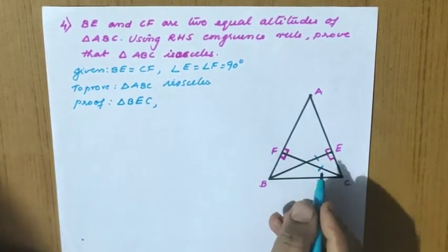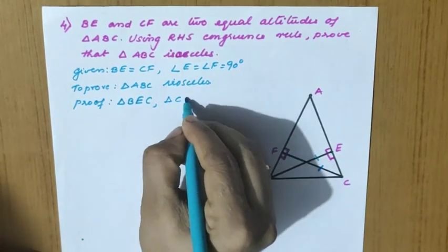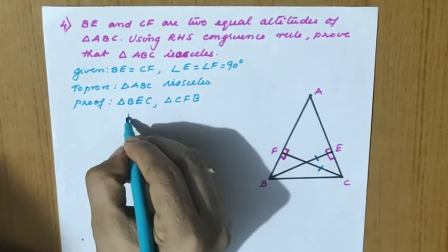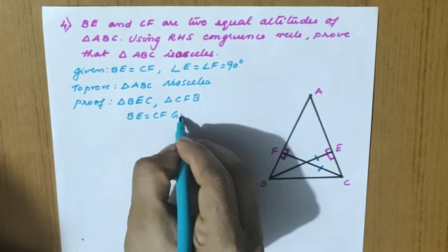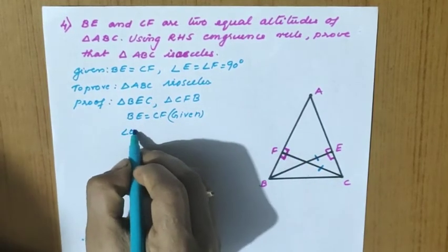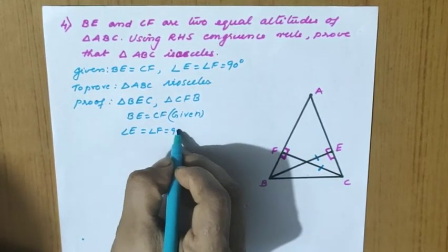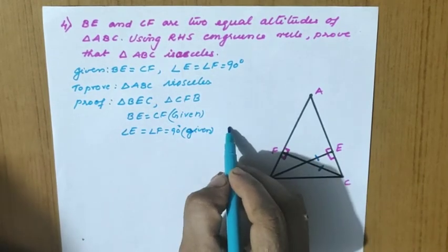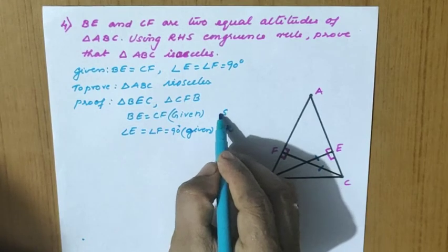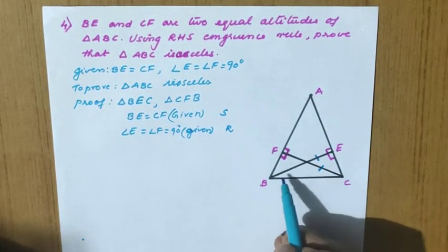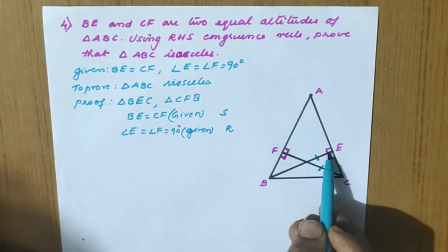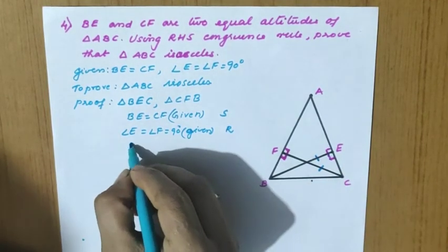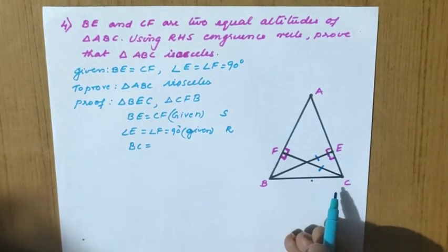Given: BE equal to CF; angle E equal to angle F equal to 90 degrees. To prove: triangle ABC is isosceles. In triangle BEC and triangle CFB: BE equal to CF — the two equal altitudes given. Angle E equal to angle F equal to 90 degrees, since altitude property — also given. We now check for the right angle and hypotenuse.